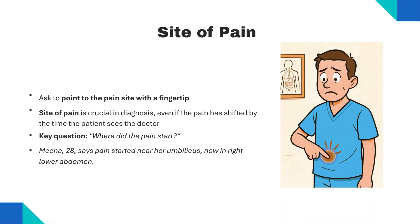First: location. Ask the patient to point to the exact site of pain with their fingertip. Even if the pain has shifted, the starting point is crucial to diagnosis. The key question is: where did the pain start? For example, Meena, a 28-year-old, says her pain started near her umbilicus and later moved to the right lower abdomen — that's classic migration. Think acute appendicitis.